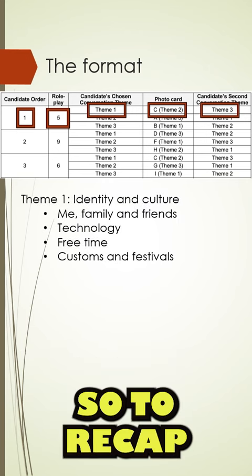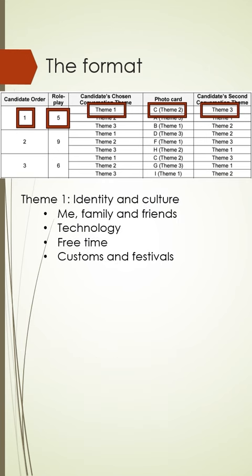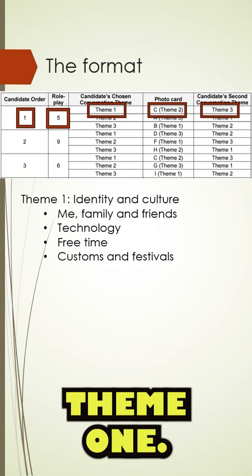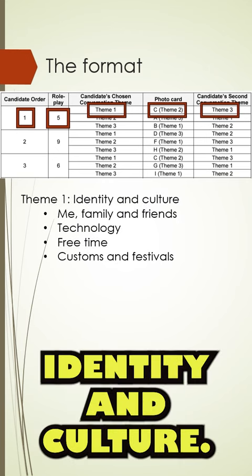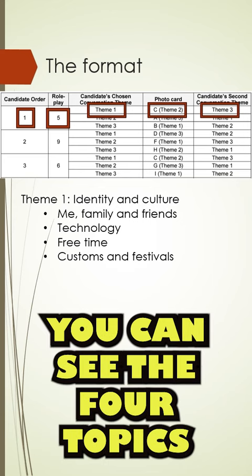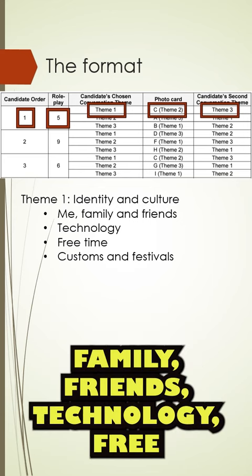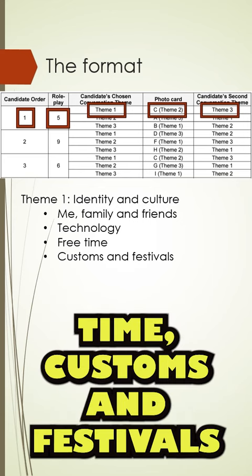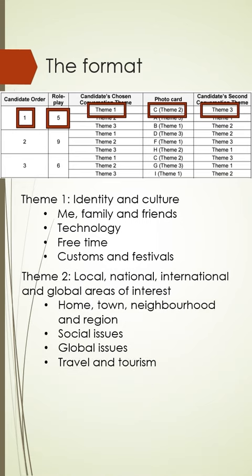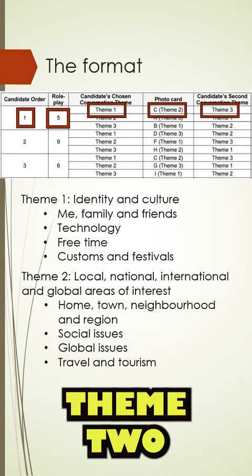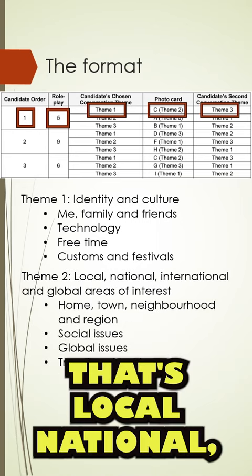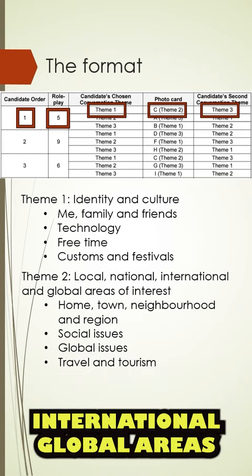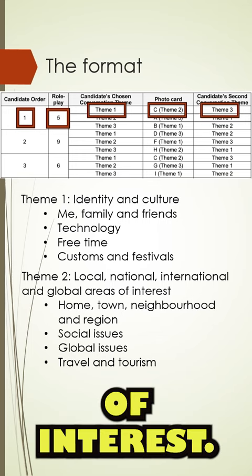To recap: theme one is identity and culture. You can see the four topics there — family, friends, technology, free time, customs, and festivals. Theme two is local, national, international, and global areas of interest.